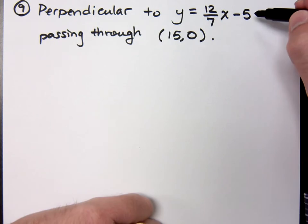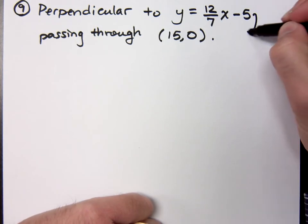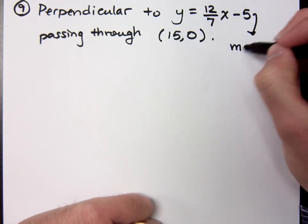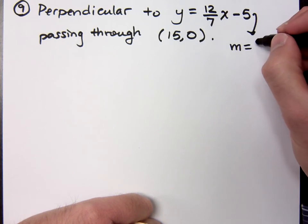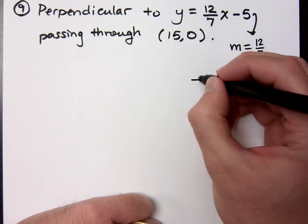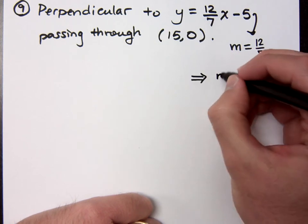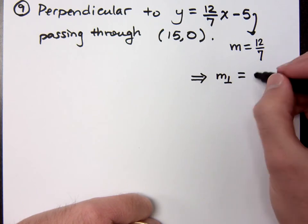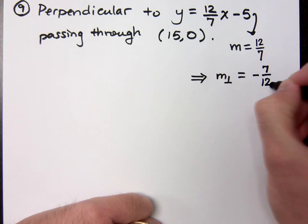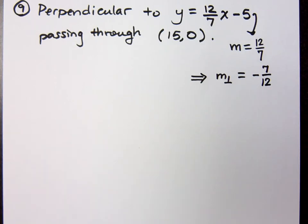So if I look at this guy that's already in slope-intercept form, what is his slope? The slope of that line is 12 over 7, which means that my perpendicular slope is what? The negative reciprocal, so you flip it and you switch the sign, negative 7 over 12. Are you with me?